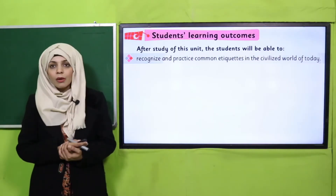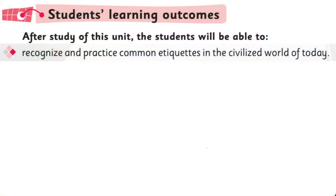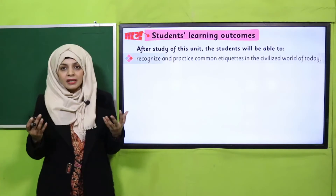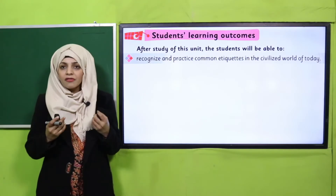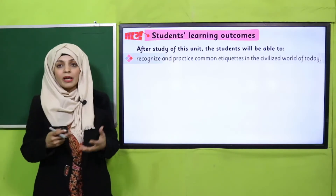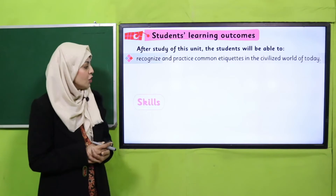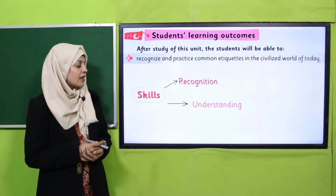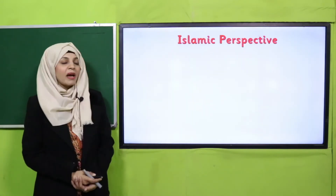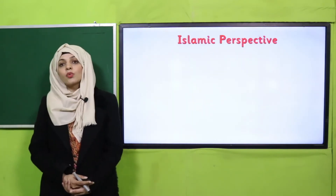The student learning outcome for today is: organize and practice common etiquettes in the civilized world of today. We will learn how to practice common etiquettes and what benefits they bring us. The skills that will be developed are recognition and understanding.